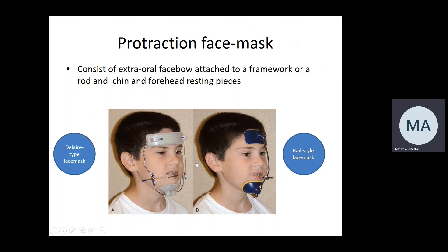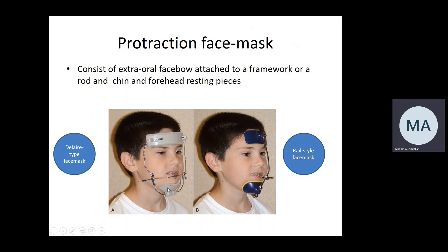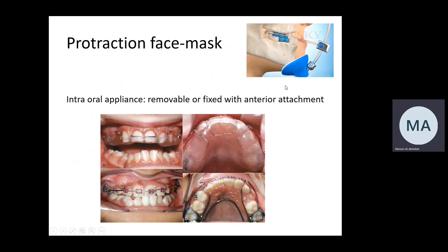Both designs have a place to position elastics extraorally, which are then connected to a hook positioned intraorally. The elastics are trying to push the maxilla downward and forward, while the forehead piece and chin piece are pushed toward the face — action and reaction. Intraorally, the elastics can be held by removable or fixed appliances, with the hooks usually positioned between the laterals and the canines.